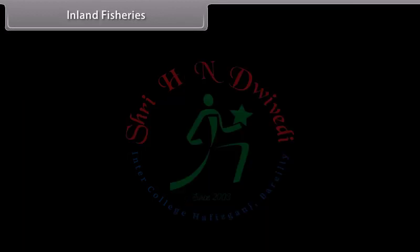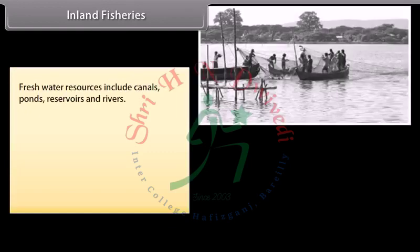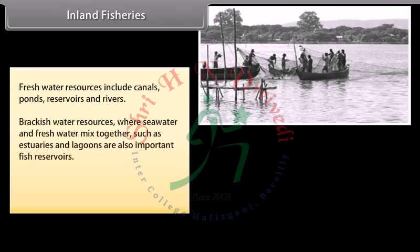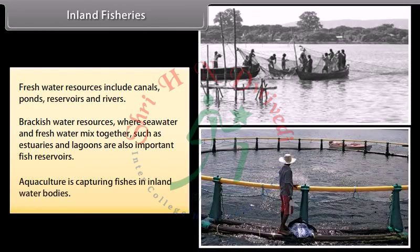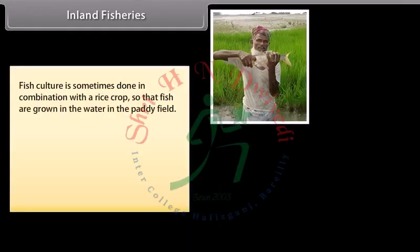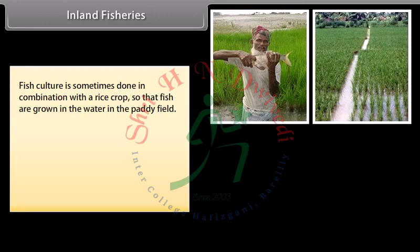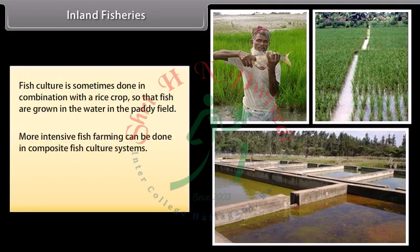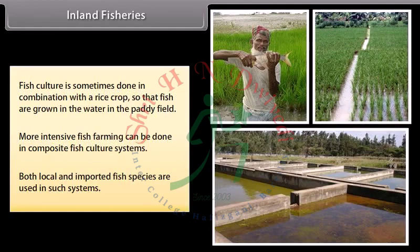Fresh water resources include canals, ponds, reservoirs and rivers. Brackish water resources where seawater and freshwater mix, such as estuaries and lagoons, are also important fish reservoirs. Aquaculture is the capturing of fishes in inland water bodies. Fish culture is sometimes done in combination with rice crops so that fish are grown in the water in paddy fields. More intensive fish farming can be done in composite fish culture systems, using both local and imported fish species.